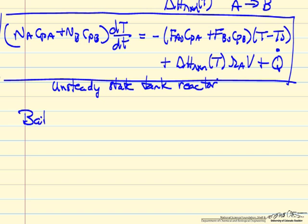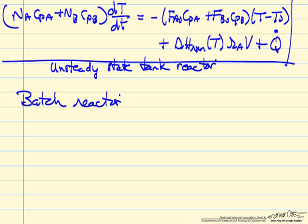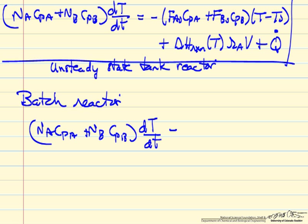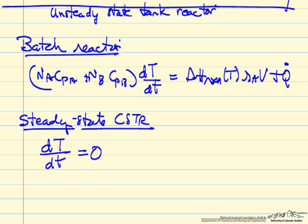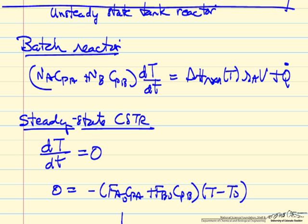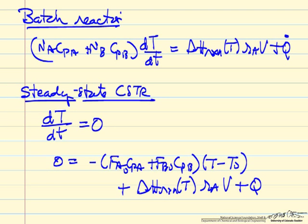For a batch reactor there's no flow into or out of the reactor. The number of moles of A and B in the reactor change with time, but there's no flow term — just the heat of reaction at temperature T, the rate of reaction, and the rate of heat addition. For a steady-state CSTR, things are not changing with time so the left side of the general equation disappears, giving zero equals the flow terms for A and B flowing in, the heat of reaction at the reactor temperature, the rate of reaction evaluated at reactor temperature, and Q-dot. This is solved simultaneously with the mass balance.